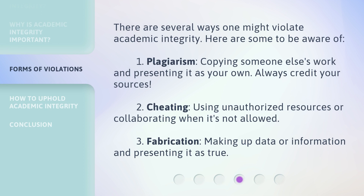There are several ways one might violate academic integrity. Here are some to be aware of. 1. Plagiarism: Copying someone else's work and presenting it as your own. Always credit your sources. 2. Cheating: Using unauthorized resources or collaborating when it's not allowed. 3. Fabrication: Making up data or information and presenting it as true.